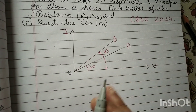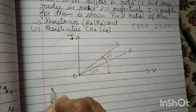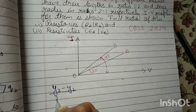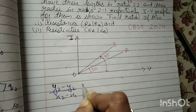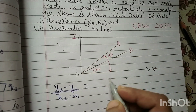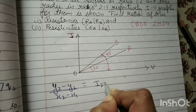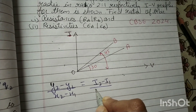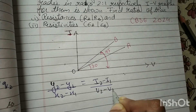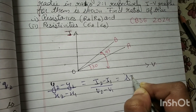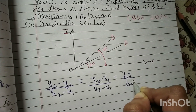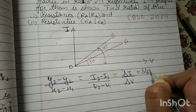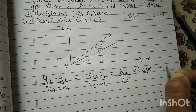Let's talk about the graph. How do we get the slope? It is y2 minus y1 upon x2 minus x1. So the slope of the IV graph is i2 minus i1 upon v2 minus v1, which is delta i upon delta v. The slope of the graph is called tan theta.